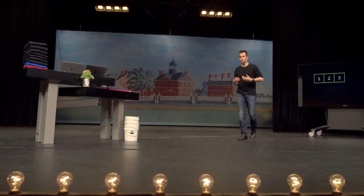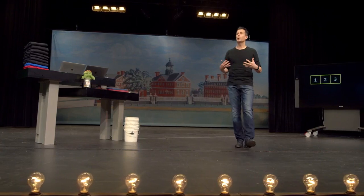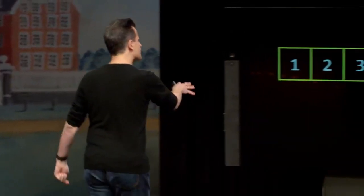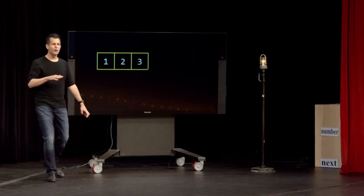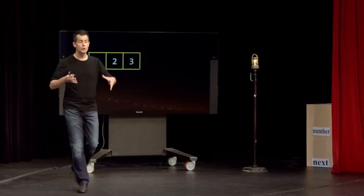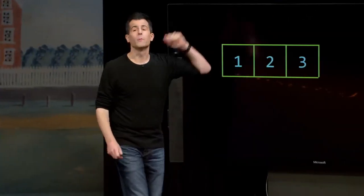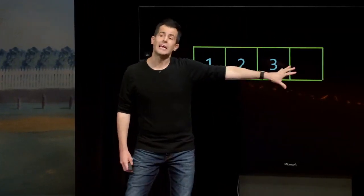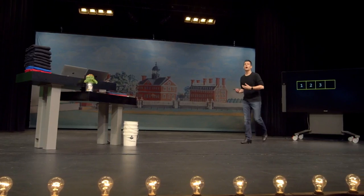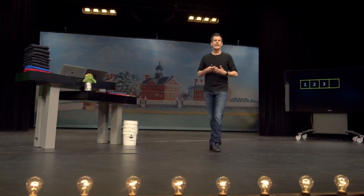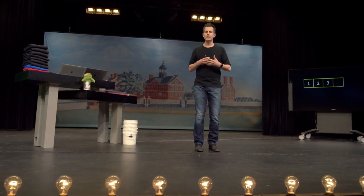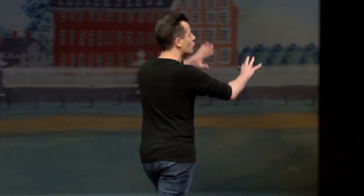Suppose now you want to add another number to this array, but you've only had the forethought to create an array of size three. The catch with arrays in C is that they're not really easily resizable. You have to decide in advance how big the array is going to be. So if you change your mind later, or your program needs to store more values, you're kind of in a bind. If you wanted to insert the number four, you would ideally plop it right at the end of the array.